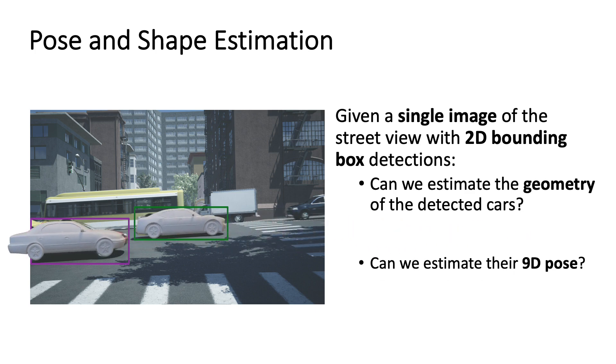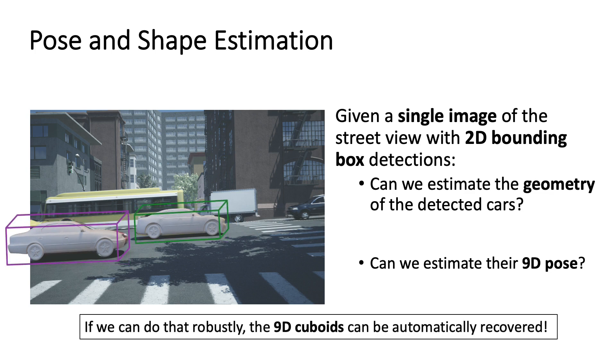If the shape and pose are known, the cars can be projected to their location with respect to the camera, which in return allows to recover 9D cuboids.